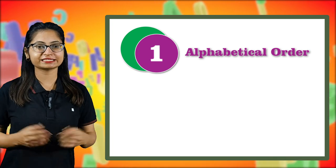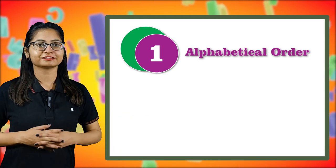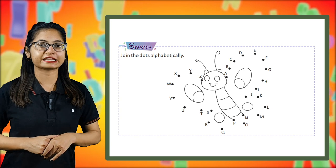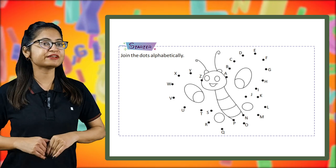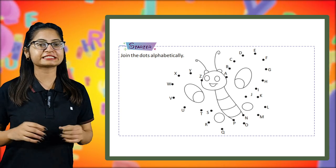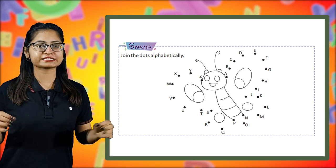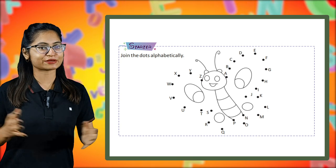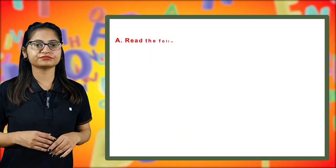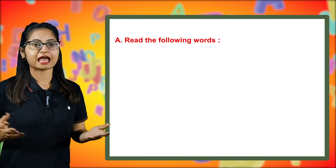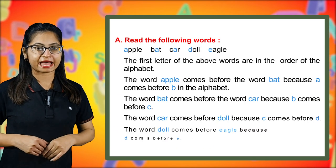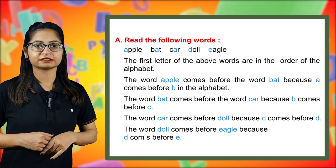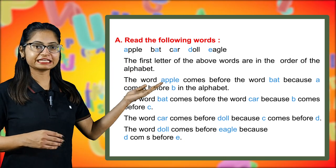Let's read the starter. I can see this might be your favorite work. Let's read alphabetically. Now it seems an interesting question you can do by yourself. Let's move forward. Read the following words: apple, bat, car, doll, eagle.